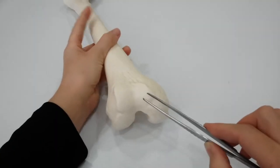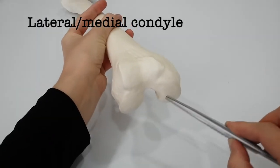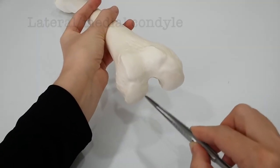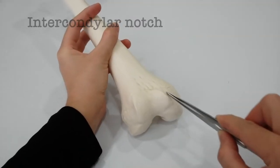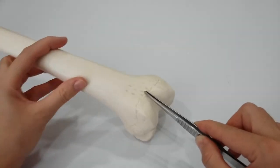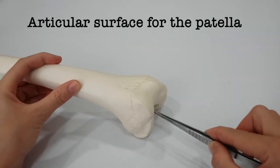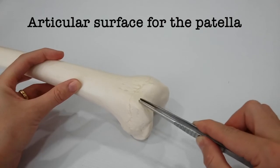The lower end of the femur has lateral and medial condyles, separated posteriorly by the intercondylar notch. The anterior surface of the condyles are joined by an articular surface for the patella. Here it is.